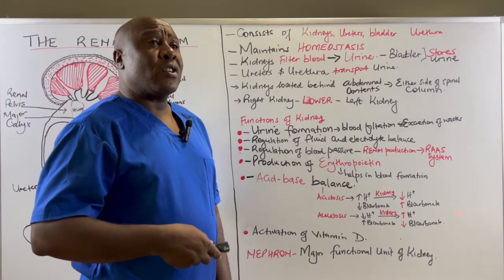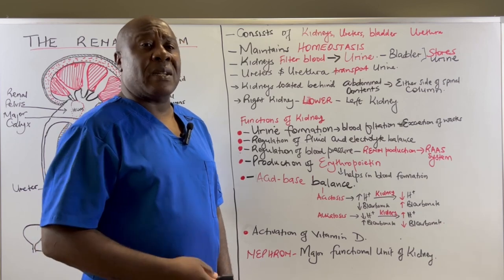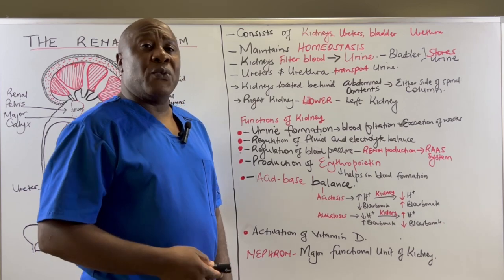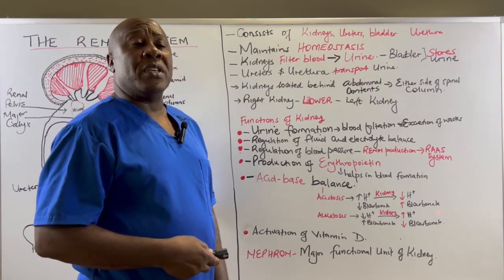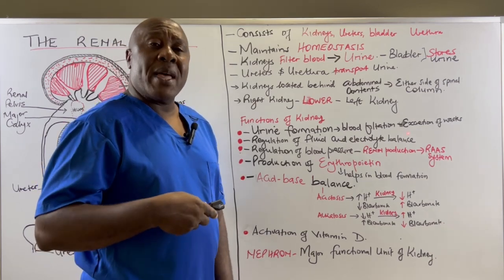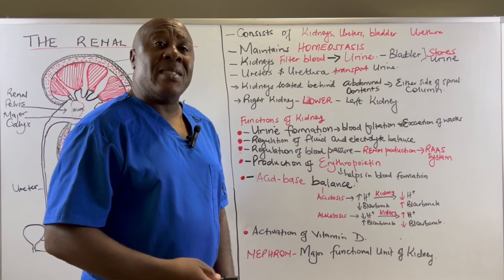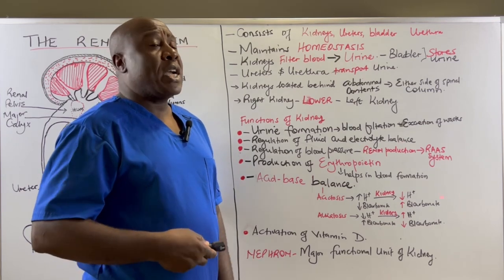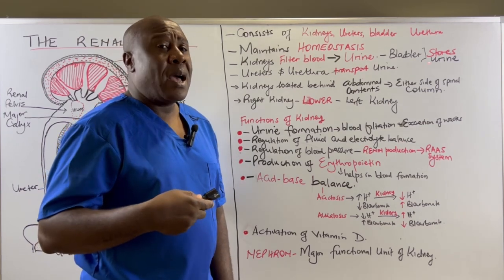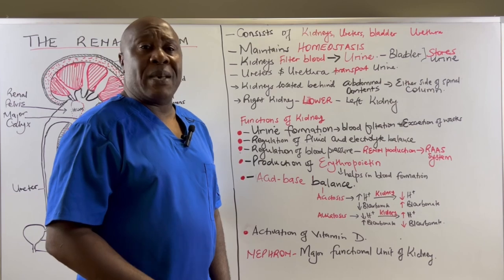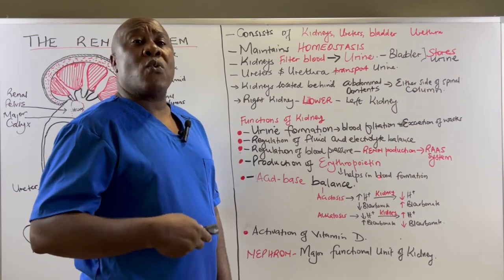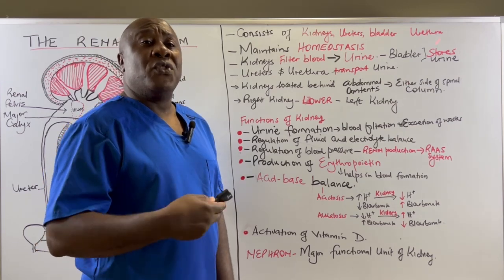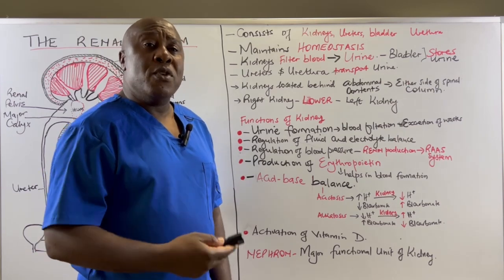We have systems like, for example, the fluid system — we require a balance in the fluid in our bodies. We require a balance in the electrolyte concentration in our bodies. We require a balance in our temperatures and a balance in our pH. This is homeostasis.